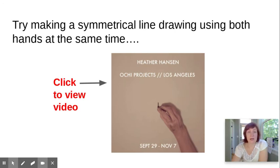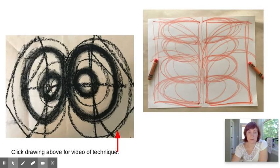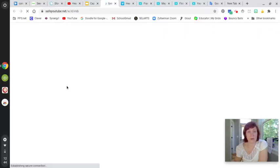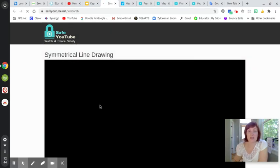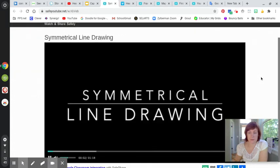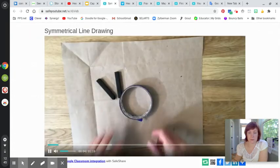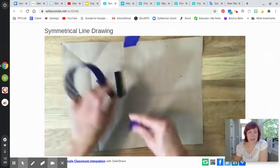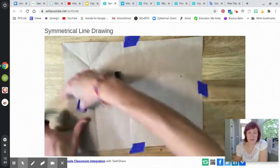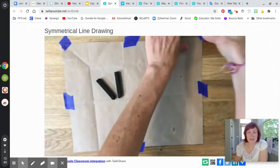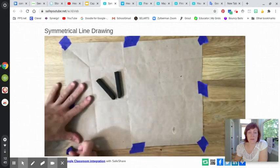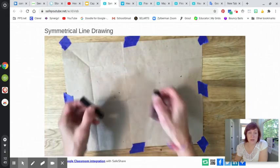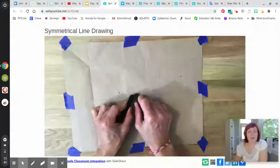We can try making symmetrical line art using both hands at the same time. Let's see if we can watch this video to see how we might do it at home if we don't have a giant paper and a giant floor. Definitely using some tape or something heavy or a friend to stand on the corners so that the paper doesn't jiggle around. You might have crayons or pencils or you might have some super black charcoal like Heather Hansen.